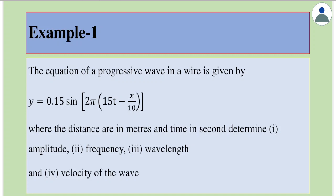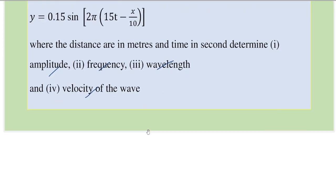Hello everyone. Let's look at numericals. Example 1 says the equation of a progressive wave in a wire is given by y = 0.15 sine of 2π(15t - x/10), where the distances are in meters and time in seconds. The question says determine amplitude, frequency, wavelength, and velocity of the wave. Let's first write down the equation given to us.